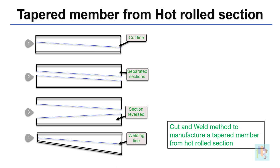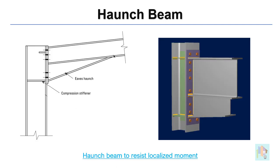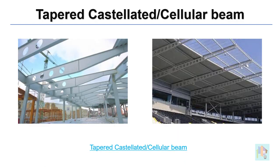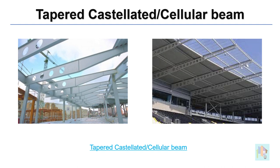We can use a hot-rolled section with smaller depth, cut the section along the length at a slope, then reverse one of the cut pieces and weld it to create a tapered member — similar to the castellated beam manufacturing process. With this approach, we can use a wide flange section with smaller depth in a long span, increasing depth where required and reducing it where demand is low. Also, if bending is high only at the end, we can use a uniform profile with haunches at the ends to resist localized high bending moment. We can also use castellated tapered members which further reduce steel usage. There are many other optimization techniques to minimize steel usage — let me know in the comments if you want to know more.